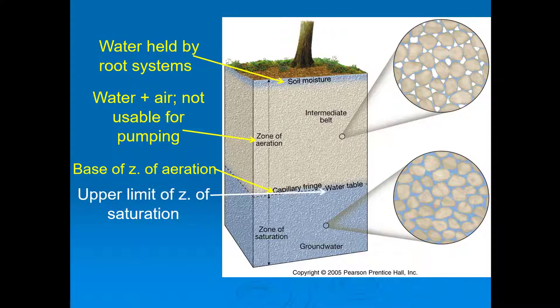Just above the capillary fringe is what's called the water table, which is super important. The water table marks the upper limit of the zone of saturation. If you've ever gotten water in your basement, that's because the water table has risen above the level of your basement floor and groundwater is rushing in through pore spaces and fractures in your foundation. The water table will change its depth seasonally — in the Northeast during winter it will drop because water is stored on the surface as snow, then in spring when snow melts and precipitation is high, the water table rises, which is when you're more likely to get water in your basement.